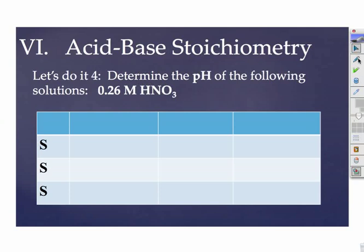And I'm going to be using that SSS method: start, shift, and stop. So we're going to write our reaction. We have HNO3. This should be, let's do it four in your notes, page seven. And this is a strong acid, so I'm going to put a single arrow. I'd get H+ plus NO3-.